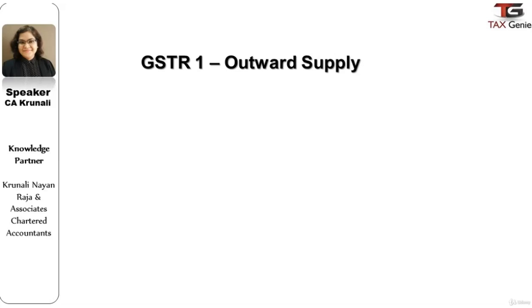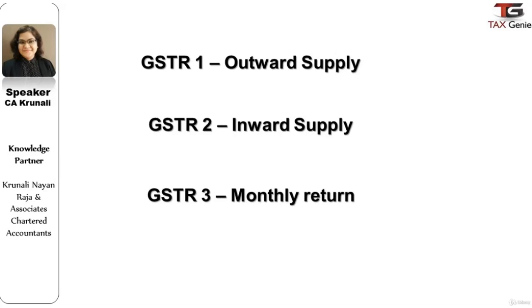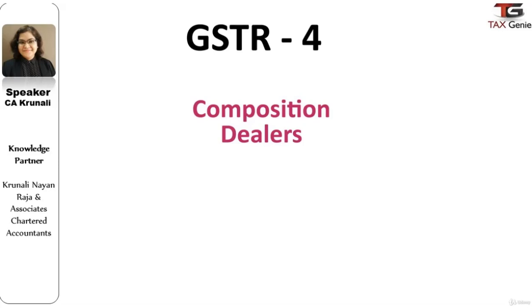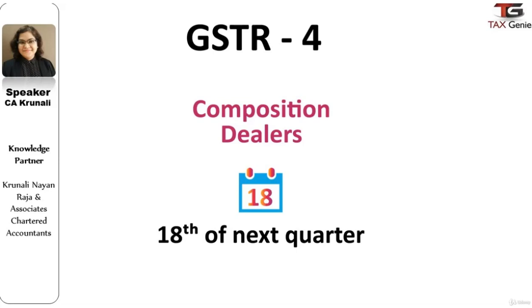GST Returns 1, 2, and 3 are the three important returns to be filed by regular dealers on a periodic basis. We now move on to discuss the special categories of returns. GST Return 4 is to be filed by a person opting for the composition scheme. This return is due by the 18th of the next quarter, which means the return for the quarter ended June 2017 would be due by 18th July 2017.